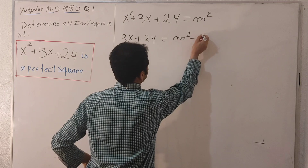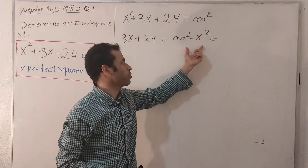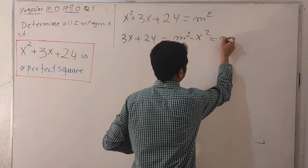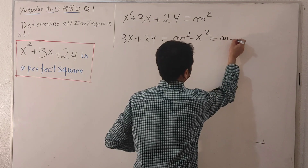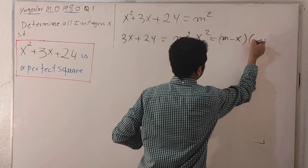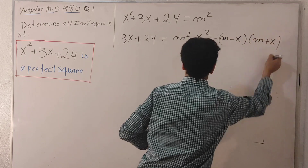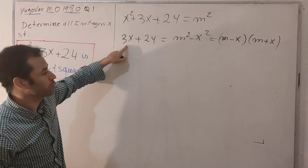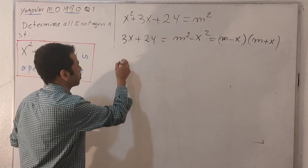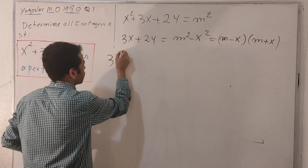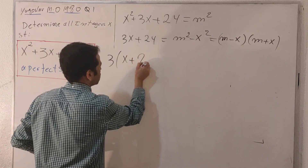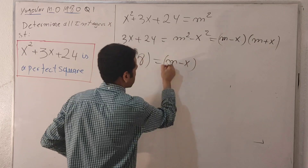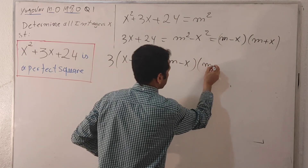This is in the form of the difference of squares, so I'm going to factor it out: (m minus x)(m plus x). On the left-hand side I'll take 3 as a common factor, giving us 3(x + 8) equals (m minus x)(m plus x).